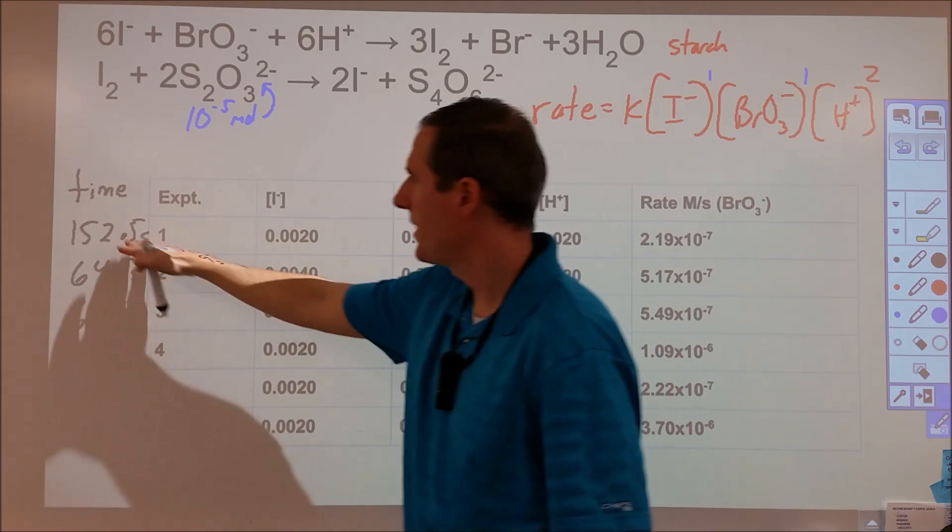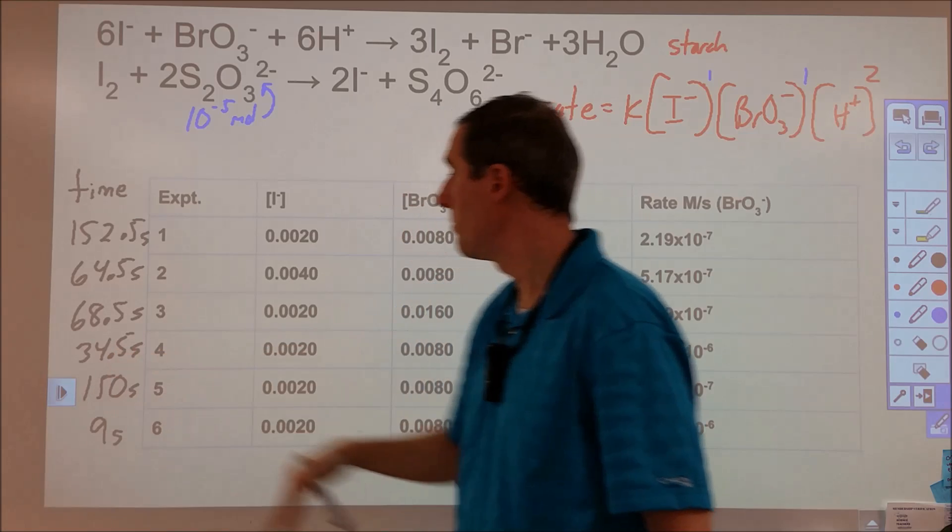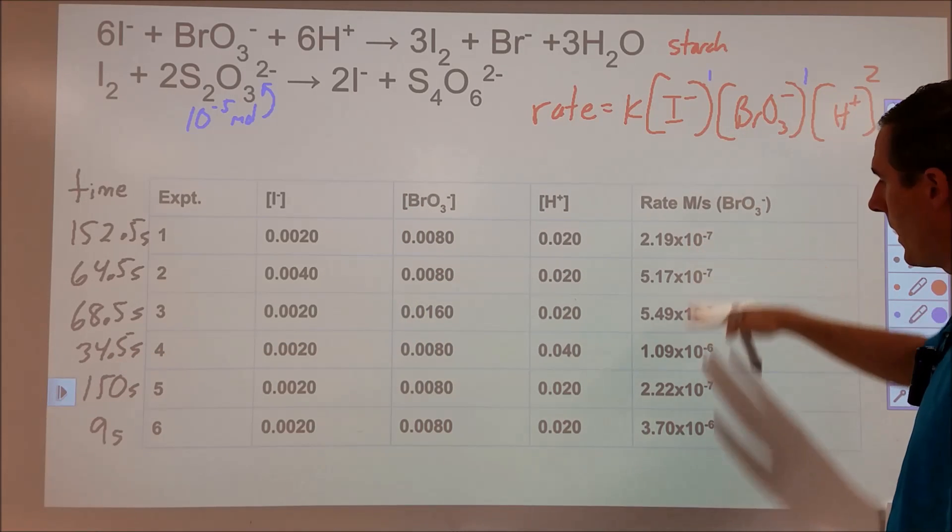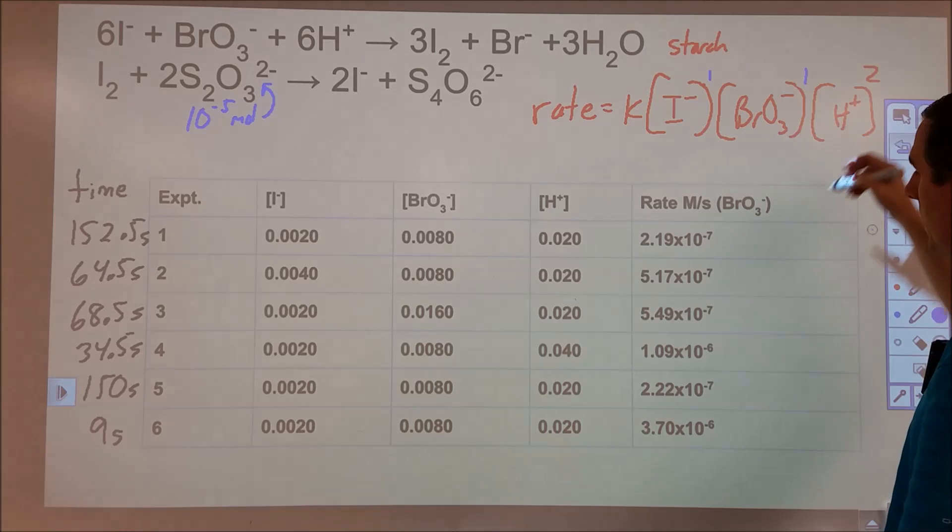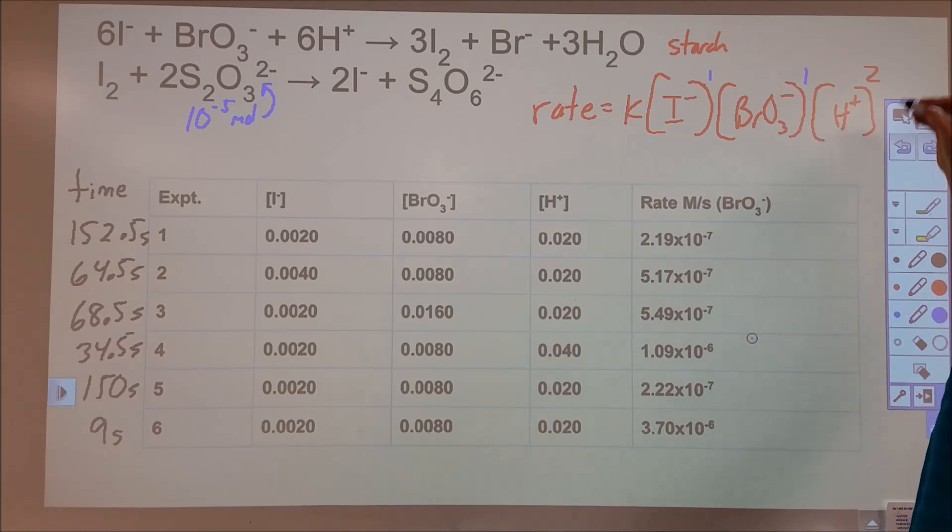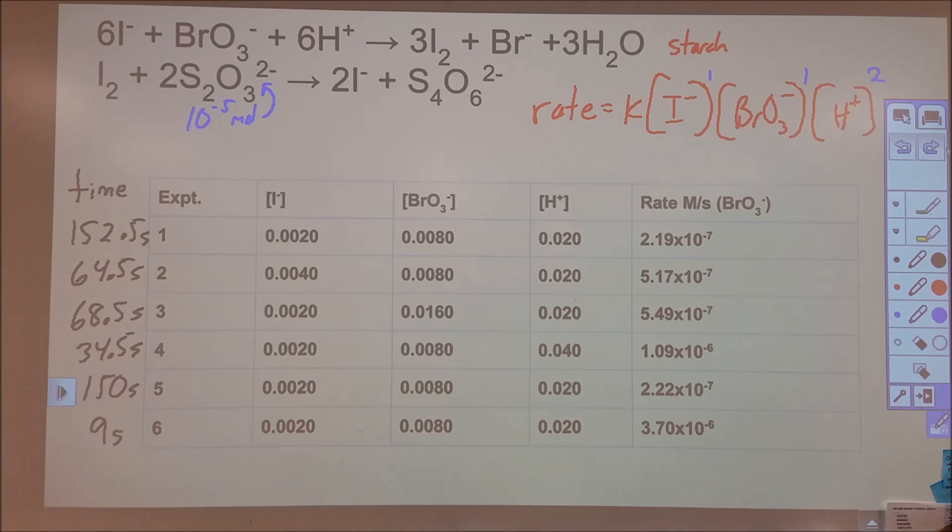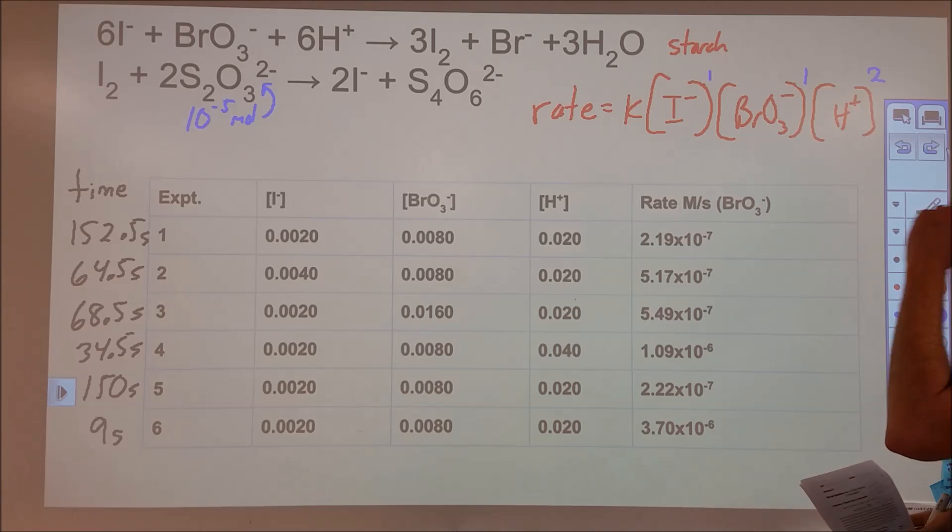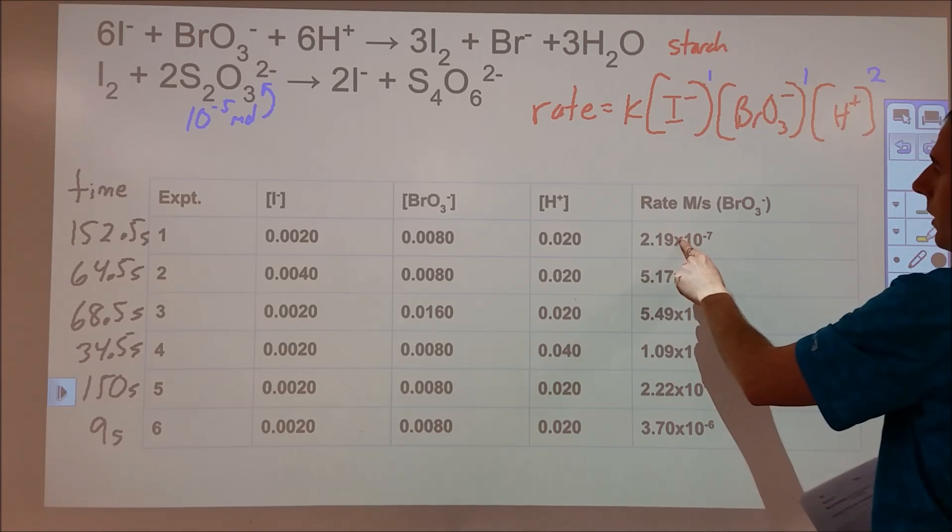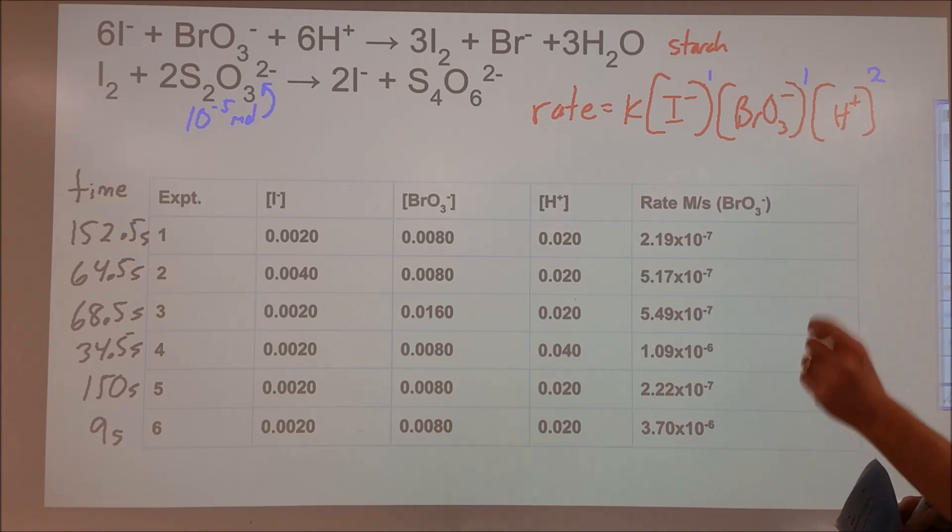For the other one, you can kind of see from the time, so that makes sense. You're going about time and half. The other one, it was much, much faster. So if we look, now we're about 2.5 to about 10. So we're looking at a case where this quadruples when the H-plus concentration doubles. So we can change this Z to a 2, and that's our rate law. Then what we can do is we can plug in any one of our rates with all three of their concentrations and solve for the rate constant.